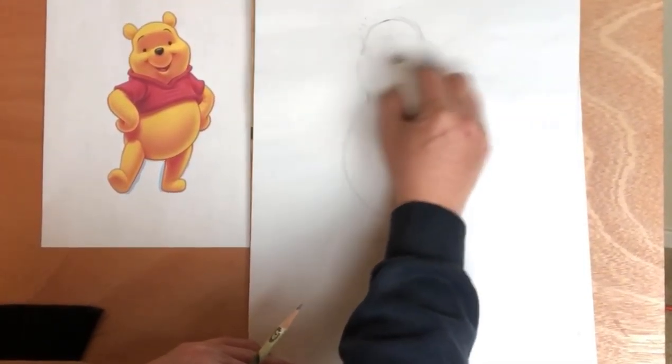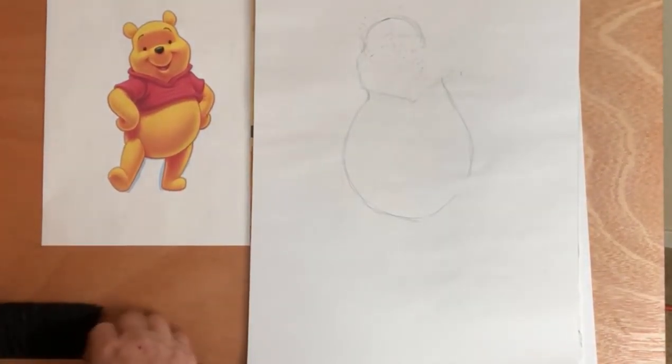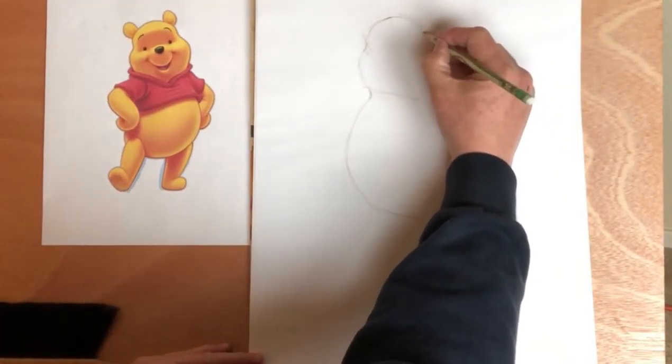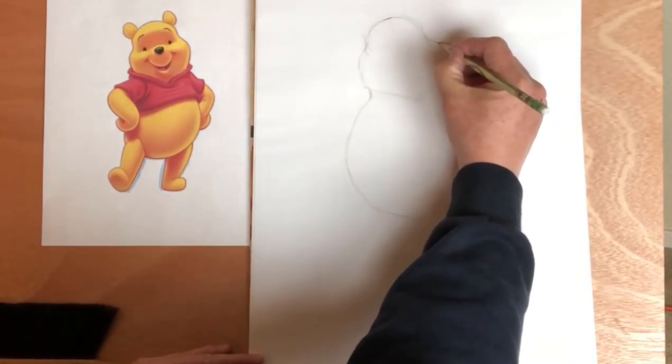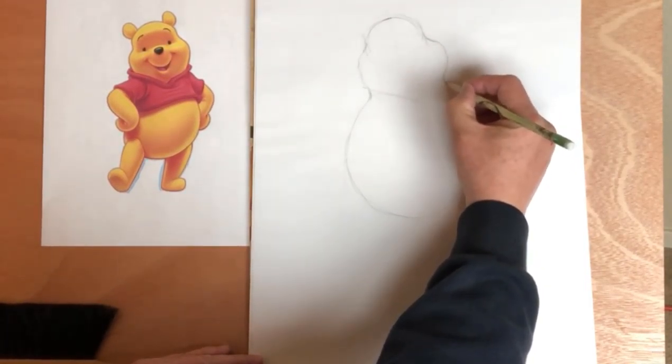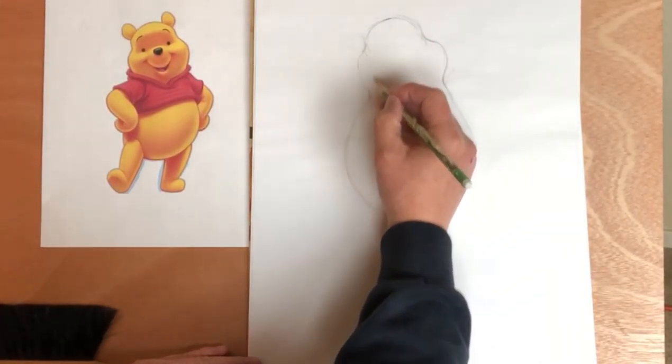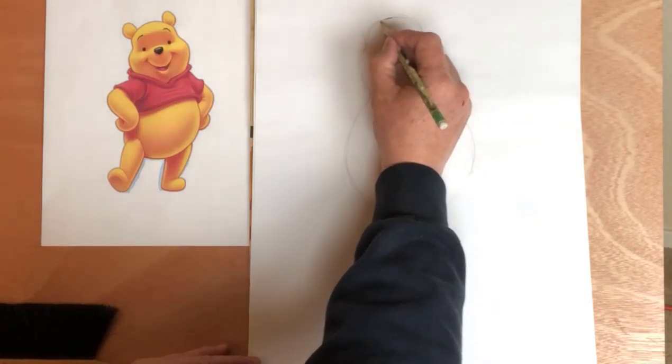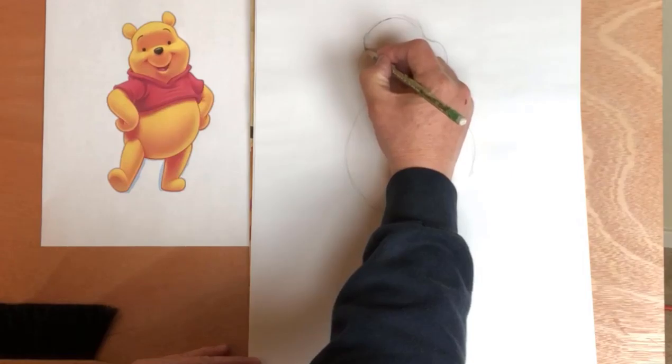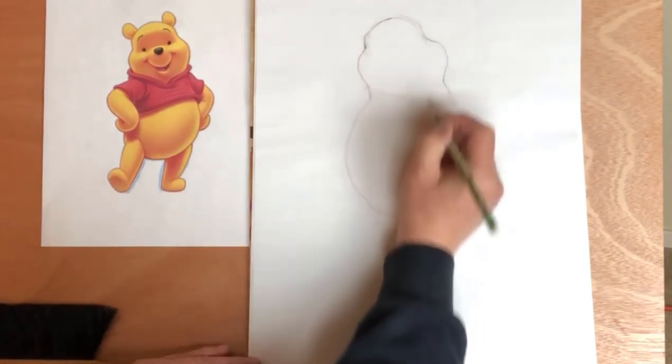That's how artists are. We're always erasing and correcting. It's a whole series of corrections. We want this to connect right here because that's where the body is, and we're going to draw the clothes over it.